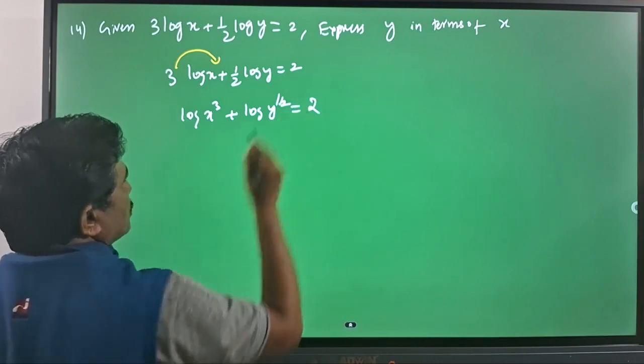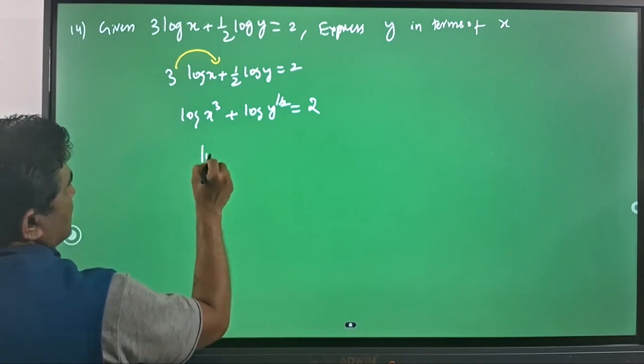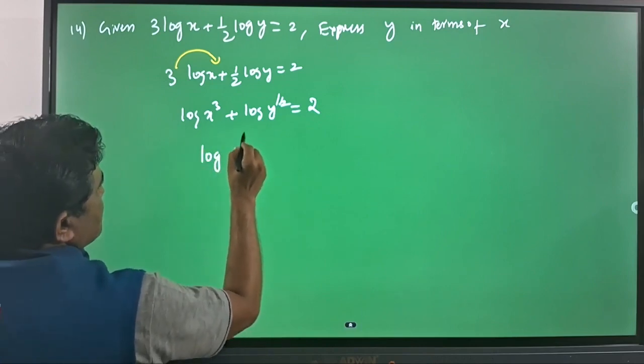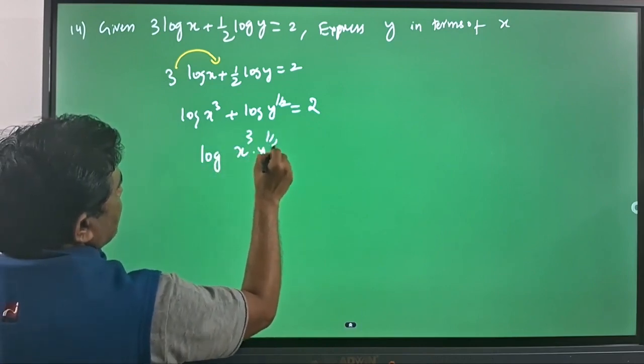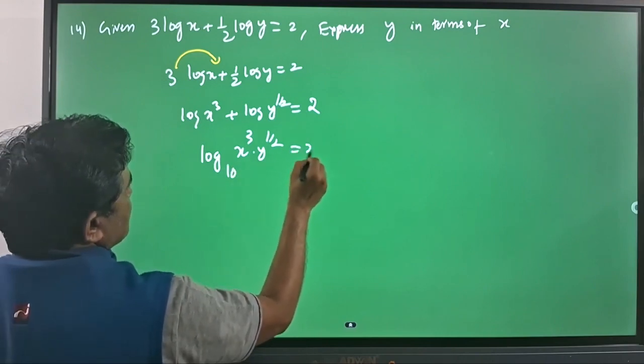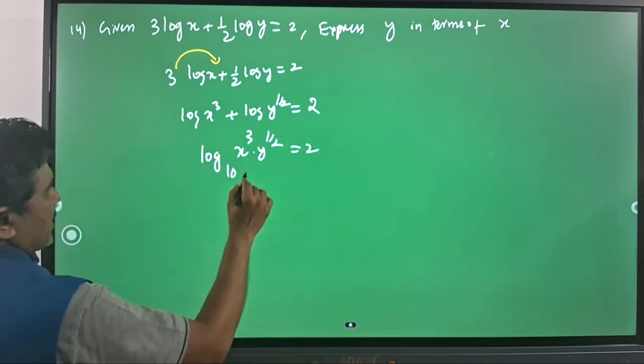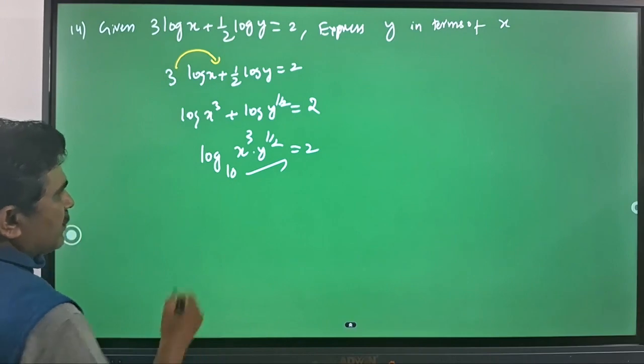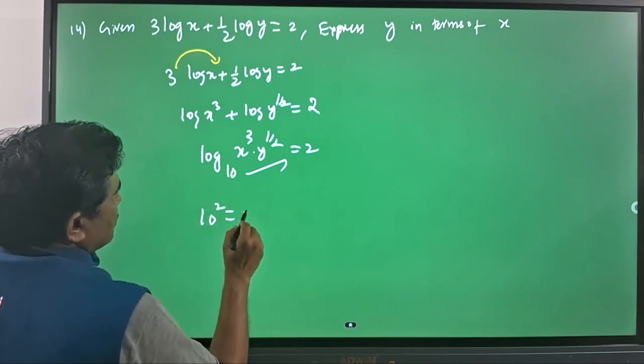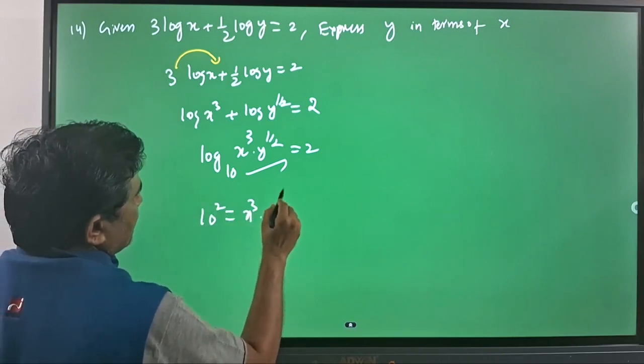equals 2, and this I can condense as log of x³ times y^(1/2) with base 10 equals 2. By converting into exponential form, you have 10² equals x³ times y^(1/2).